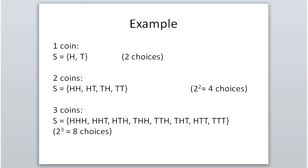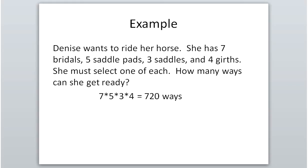With two coins, each having two options, you multiply: 2 times 2 equals 4 total choices. With three coins, each could be heads or tails, and the sample space has 2 × 2 × 2 = 8 total choices. If you count the listed possibilities in the squiggly brackets, there are indeed eight items in the sample space.